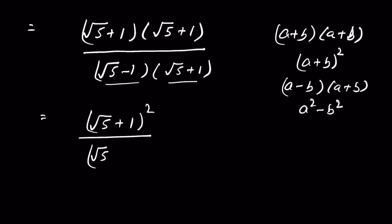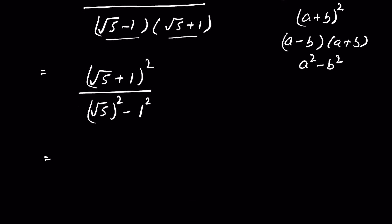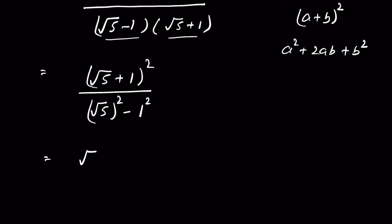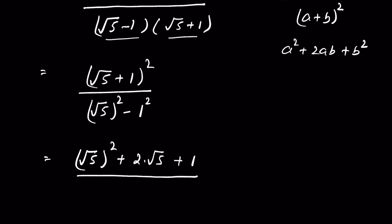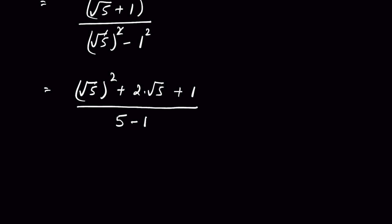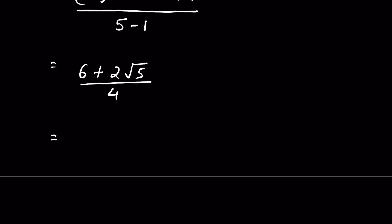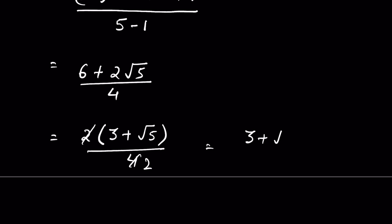So the denominator becomes square root of 5 squared minus 1 squared, which is 5 minus 1 equals 4. For the numerator, using a plus b whole square equals a squared plus 2ab plus b squared, we get square root of 5 squared plus 2 times square root of 5 times 1 plus 1 squared, which is 5 plus 2 root 5 plus 1, equals 6 plus 2 root 5. We take 2 common to get 2 times (3 plus square root of 5) upon 4, so the answer simplifies to 3 plus square root of 5 upon 2.